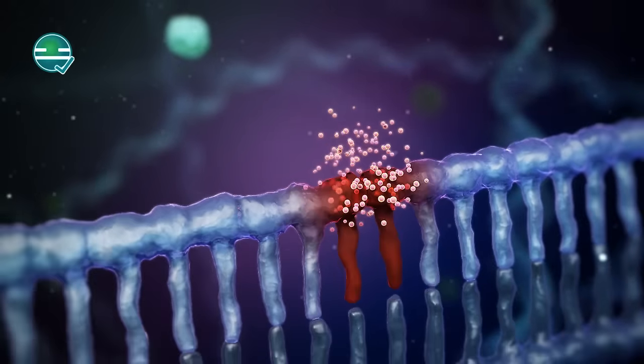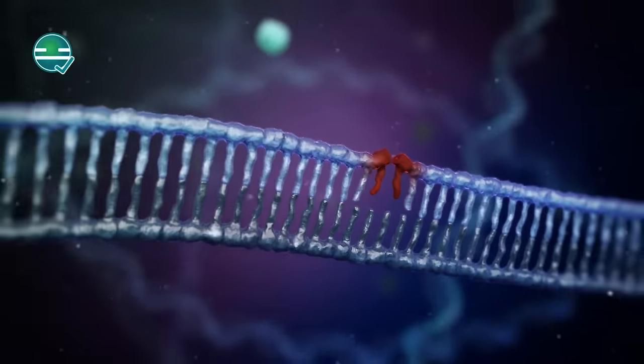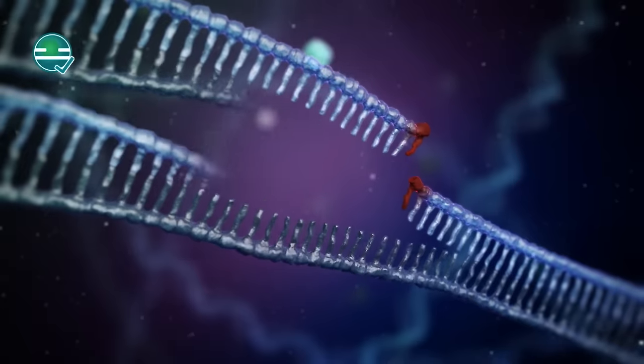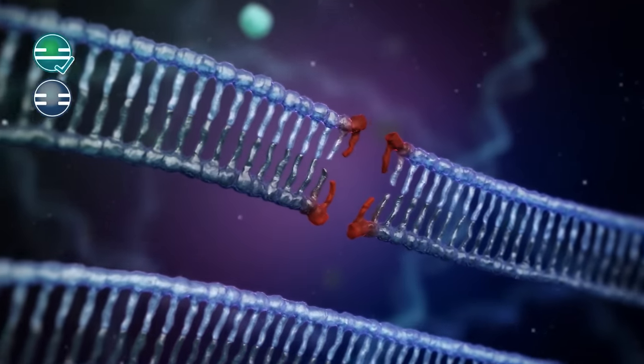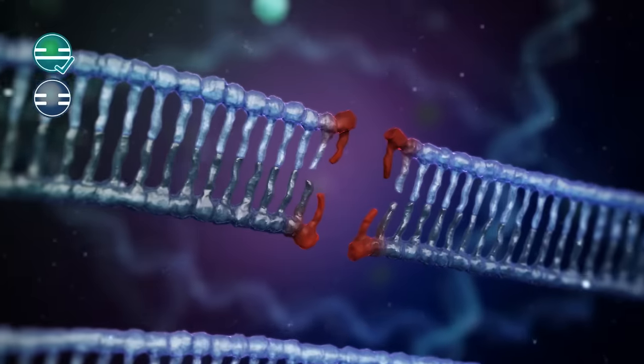When damaged DNA duplicates before the damage is repaired, a double strand break can arise. In a healthy cell, this more severe damage can be repaired with the help of homologous recombination.